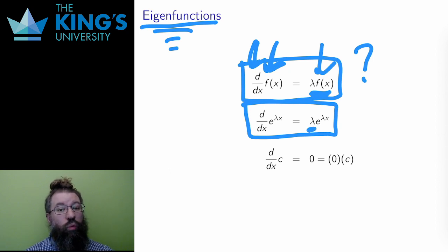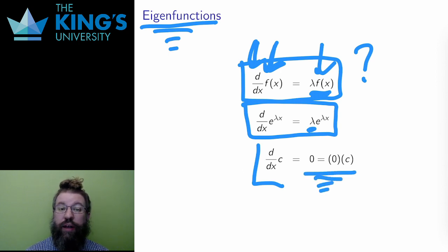Now, I have to be careful. There's actually one more eigenfunction. The eigenvalue can be zero, so I also want to know what functions have derivative of zero. The derivative of a constant is zero. So the constant function is also an eigenfunction of the derivative operator, with eigenvalue zero.